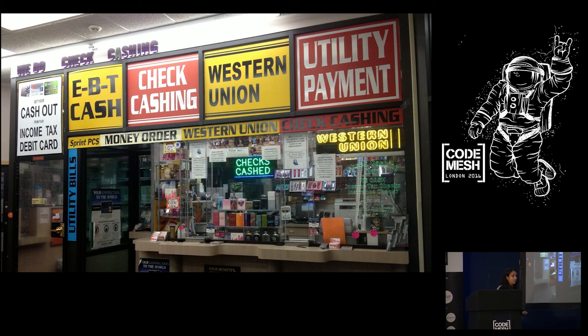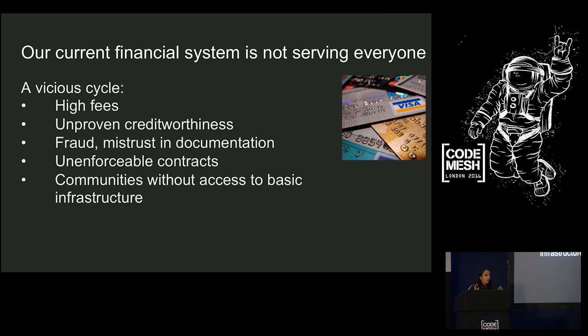There are so many inefficiencies in our existing financial system. And one of the worst ways that this manifests itself is in how expensive it is to be poor. Oftentimes, the poor don't have access to financial services or when they do, they get hit with the highest fees and the highest interest rates. And quite simply, our current financial system is not serving everyone. And we see that in many different areas. There are a lot of people who don't have access to credit because they don't have a traditional credit history. So in the eyes of lenders and the banks, they just don't exist. Rampant fraud reduces access to capital for many small businesses. In some areas, contracts are totally unenforceable. And oftentimes, rural communities are without access to basic infrastructure because they can't get the investment they need to build it.